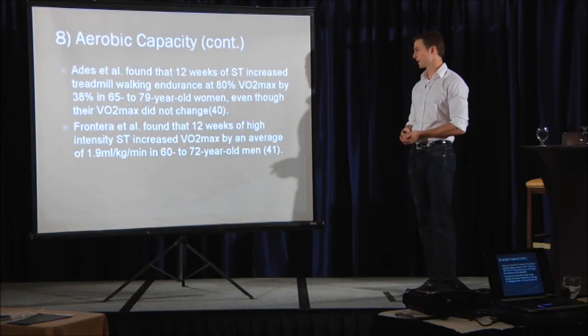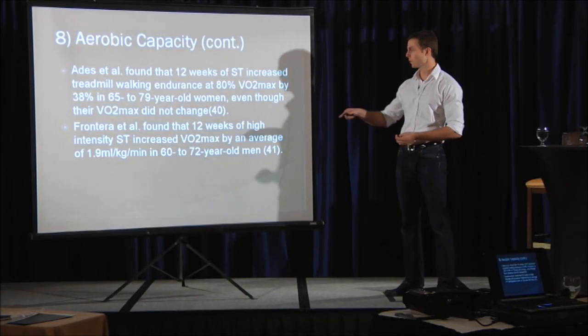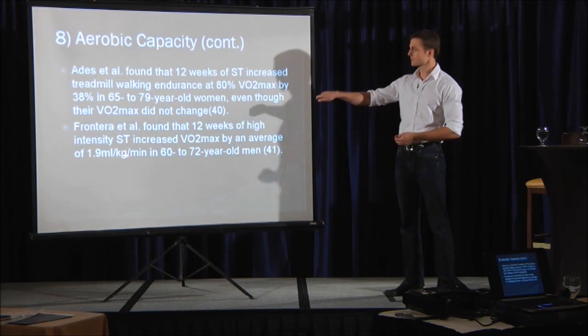So 12 weeks of high-intensity strength training increases VO2 max by an average of 1.9 milliliters per kilogram per minute. You see why it's a bit of monopoly money.